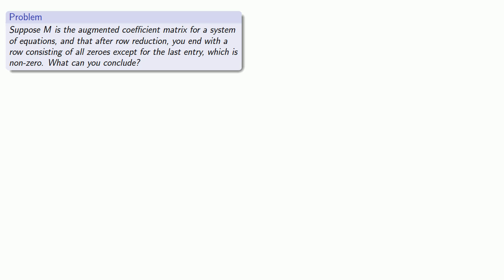What does this tell us? Suppose we have our augmented coefficient matrix and we row reduce it, ending up with a matrix where the last row is all zeros with a number at the end—say, the number five.